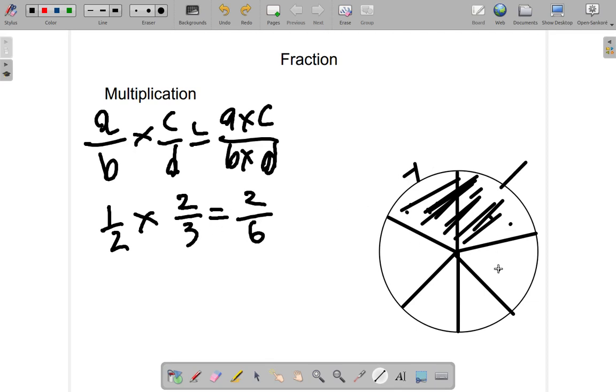Two out of one, two, three, four, five, six equal parts. So, generally, multiplying fractions, you multiply the numerators over, multiply the denominators.